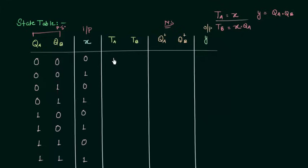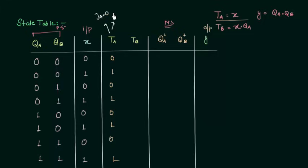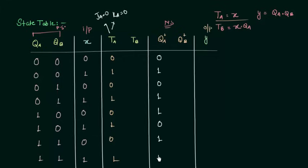TA is simply X, so it is 0, 1, 0, 1, 0, 1, 0, 1. Now I have TA and QA, and I can use these two to get QA+. When QA is 0 and TA is 0, that means JA=0 and KA=0, which is memory, so the next state equals the present state — QA+ is 0. When TA is 1, it means toggling, so we take the complement of QA. Following this pattern of memory and toggling, QA+ values are 0, 1, 0, 1, 1, 0, 1, 0.